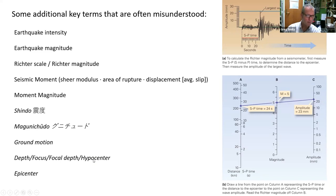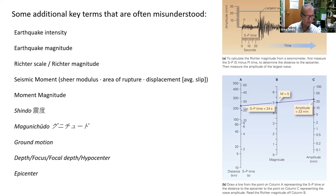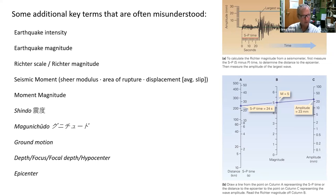Depth, focus, focal depth, and hypocenter all mean the same thing — how deep the earthquake is. The epicenter is the point at the surface of the earth right above the earthquake. The epicenter doesn't tell you about the depth, it tells you about the location on the surface. These are all relevant to seismic risk: how much magnitude was the earthquake, where was it, how deep was it, and what's the built environment like?